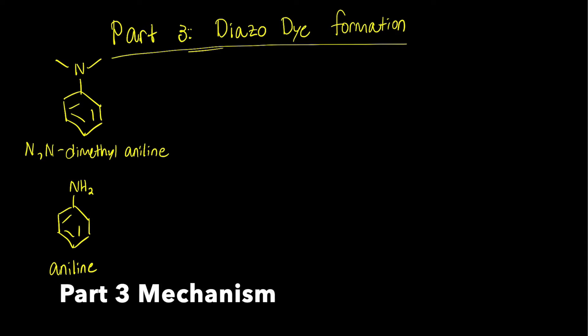Let's talk about the key bond forming step. Part 3 is the diazo dye formation for making methyl orange.